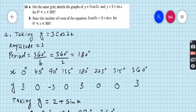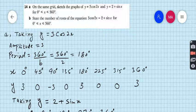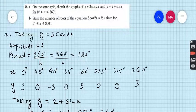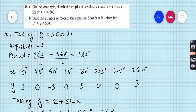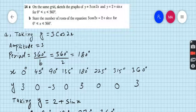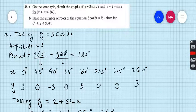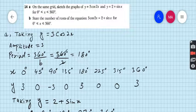Part a, taking y equals 3cos2x, this is the first equation. Here amplitude is 3 and period we can find 360 degrees upon B. B is the coefficient of x in the given equation. So 360 degrees upon B. Here coefficient of x is 2, so 360 degrees upon 2 which equals 180 degrees. Therefore the period of this function is 180 degrees.